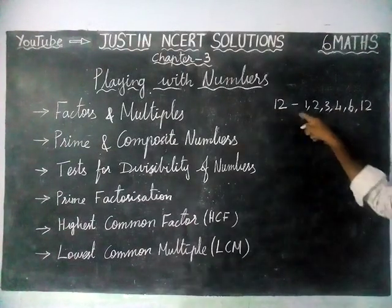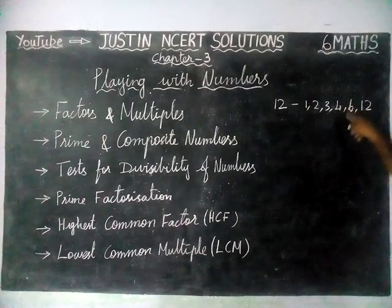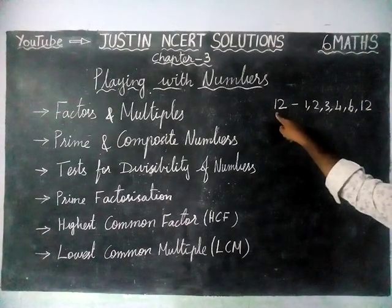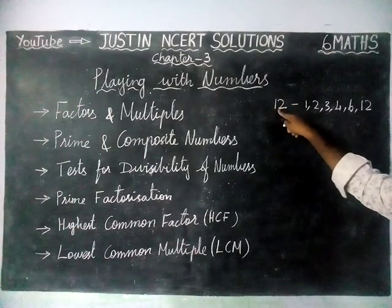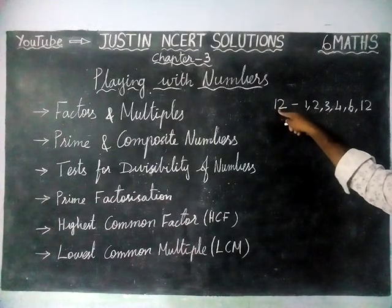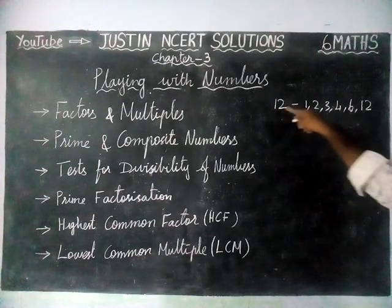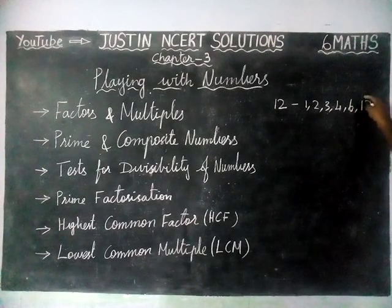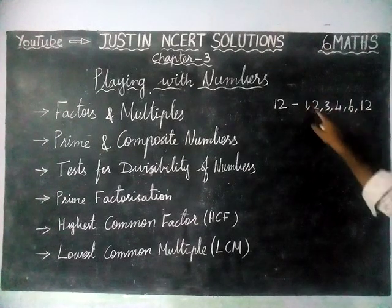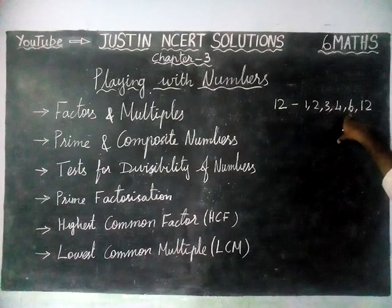Therefore, 1, 2, 3, 4, 6 and 12 are called as factors of 12. A factor of a number is an exact divisor of that number. 1 and itself are already factors for all numbers, and the remaining factors may change for each and every number.